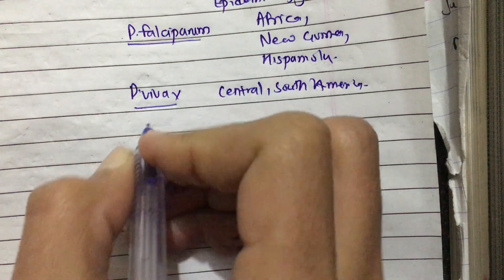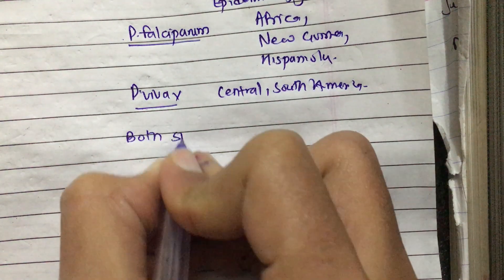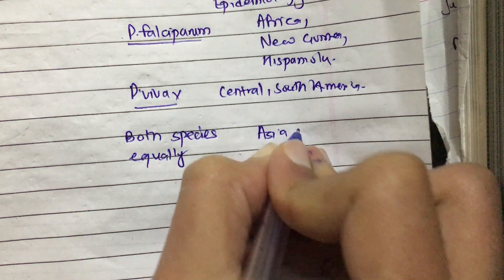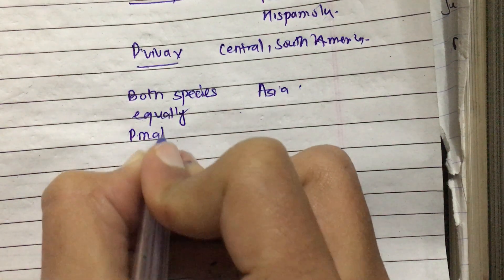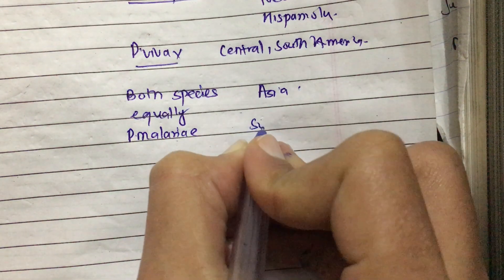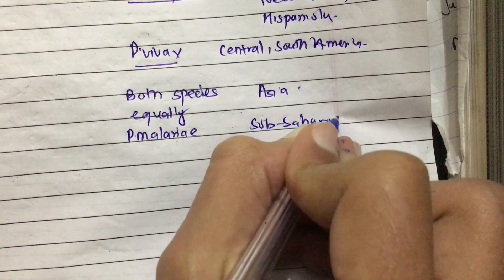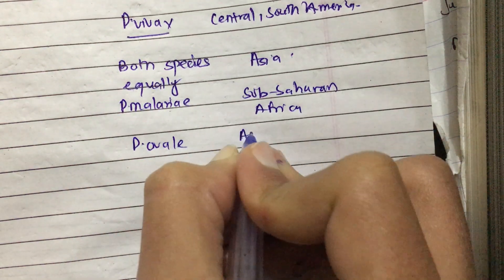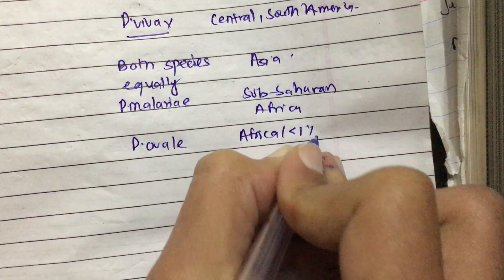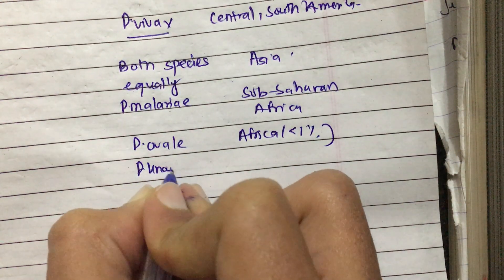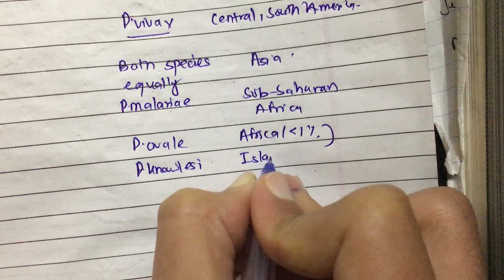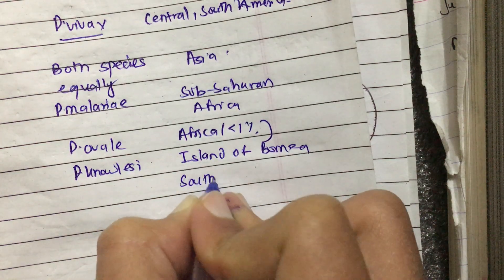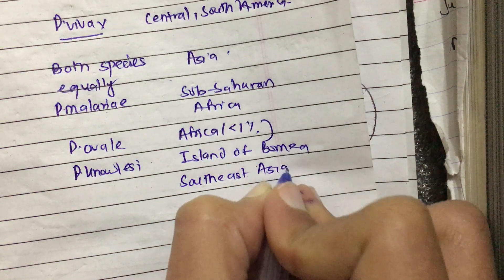Both Plasmodium falciparum and Plasmodium vivax are found equally in Asia. Plasmodium malariae is found in sub-Saharan Africa. Plasmodium ovale is found in Africa but less than 1%. Plasmodium knowlesi is found on the island of Borneo and Southeast Asia to a lesser extent.